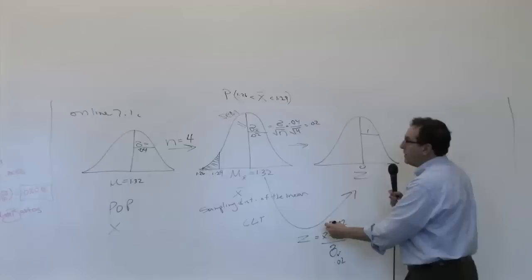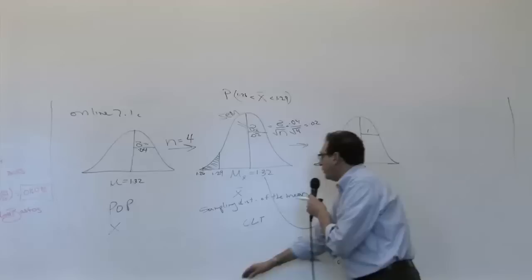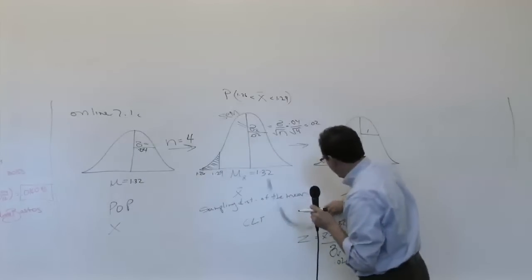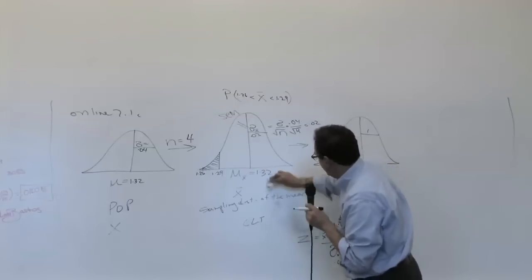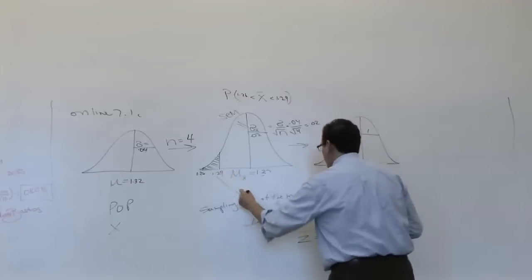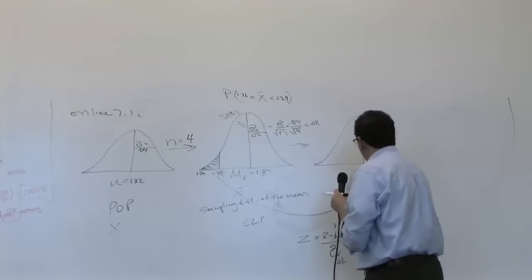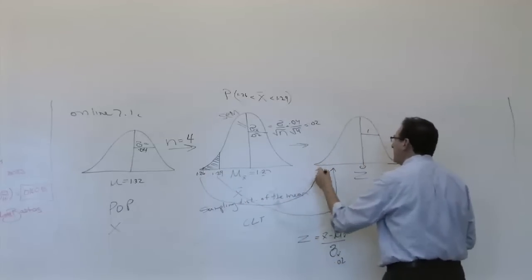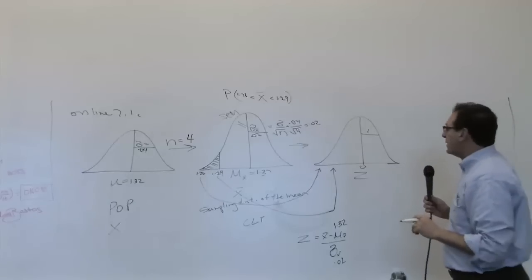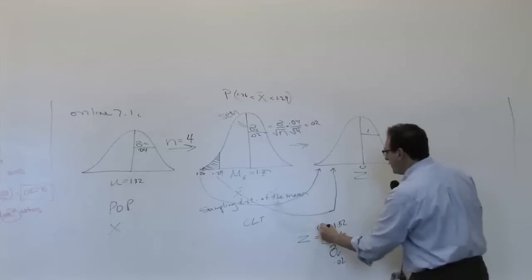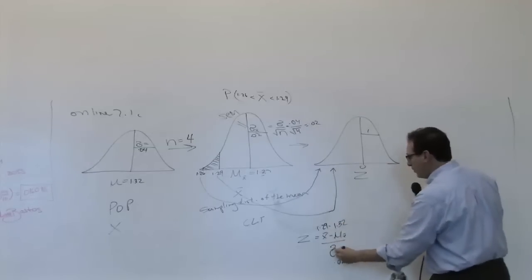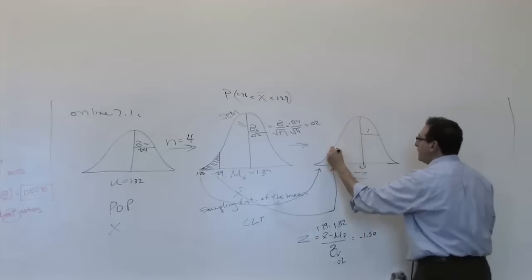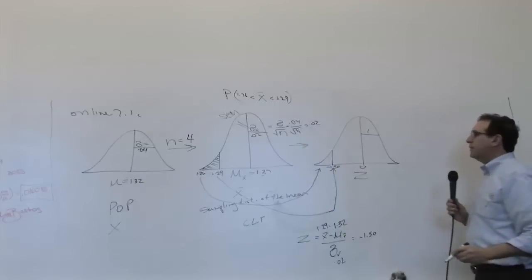So this formula has to be used twice, because we're going to take the 1.29 and convert it to its corresponding z. The 1.26 has got to be converted to a corresponding z, will be some place out here. So the first is 1.29, which is the x-bar, converted to a z-score: 1.29 minus 1.32 over 0.02 comes out to minus 0.03 over 0.02, which is minus 1.50. So minus 1.50 is the first z-score that we need for our calculations.